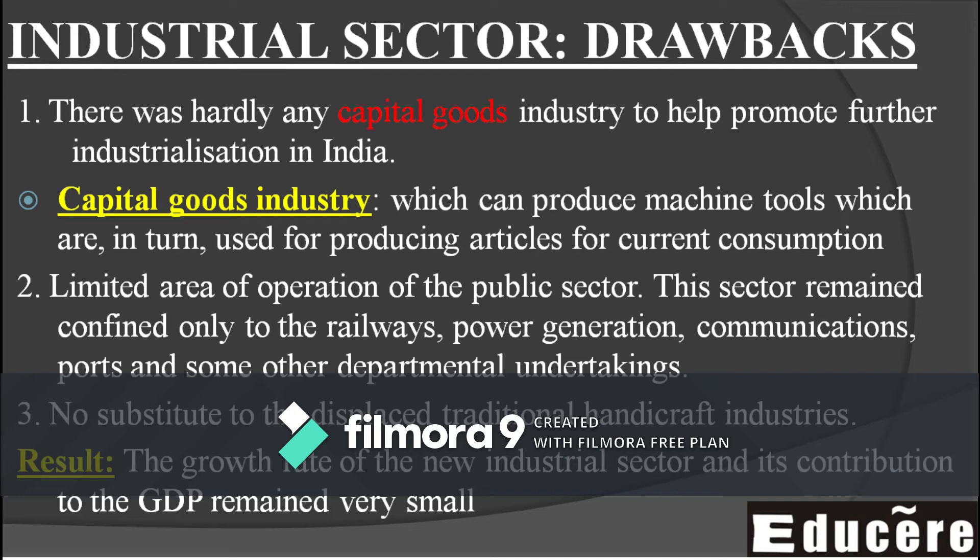The second drawback: the public sector — the government sector — was very limited. It was limited to areas like railways, power generation, energy production, communication, and ports or transportation. The role of the public sector was very confined and very low, which was a big drawback for India's industrial development.